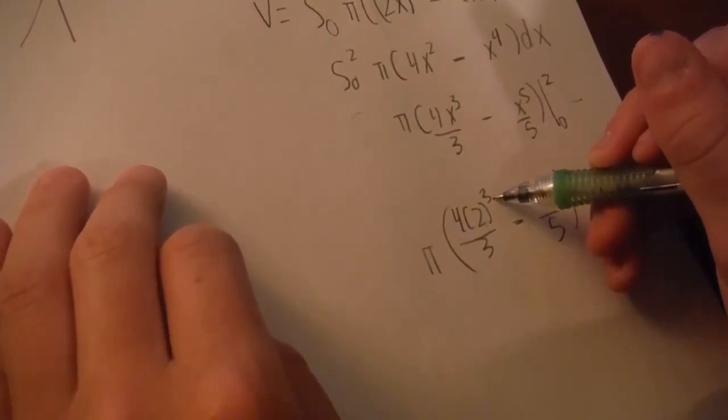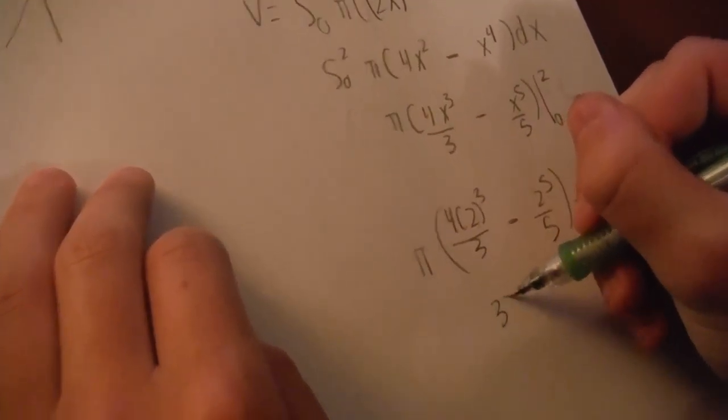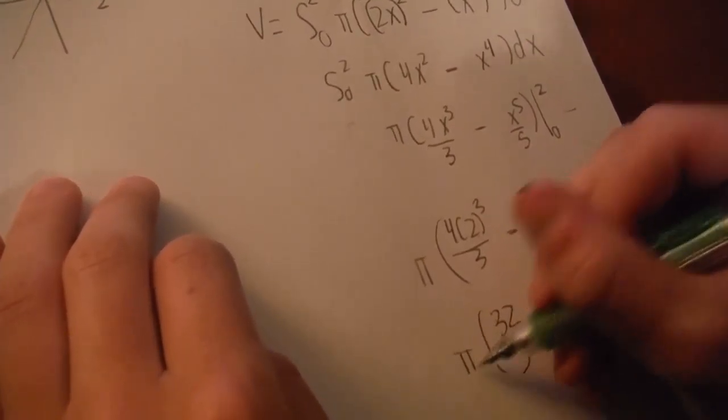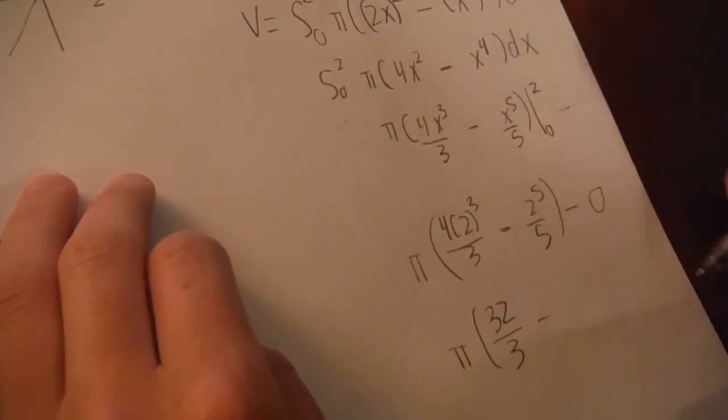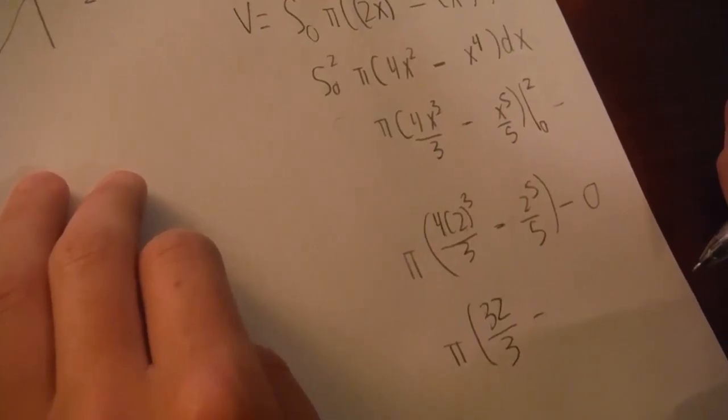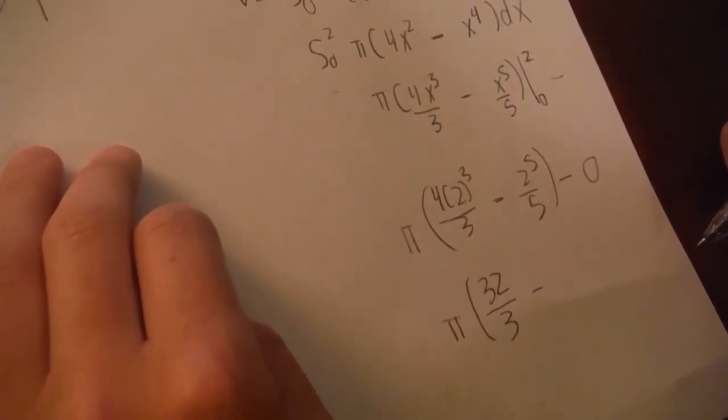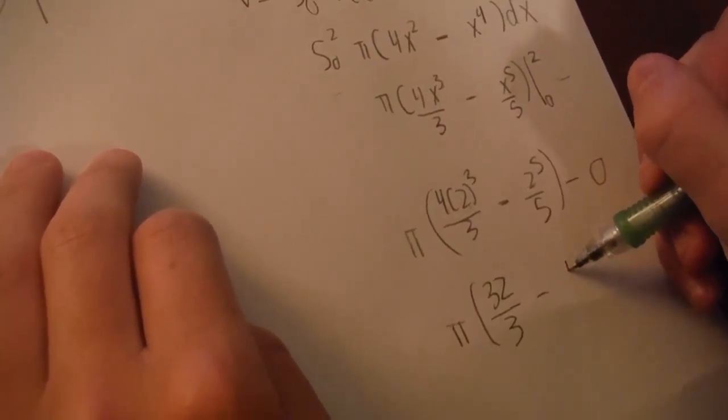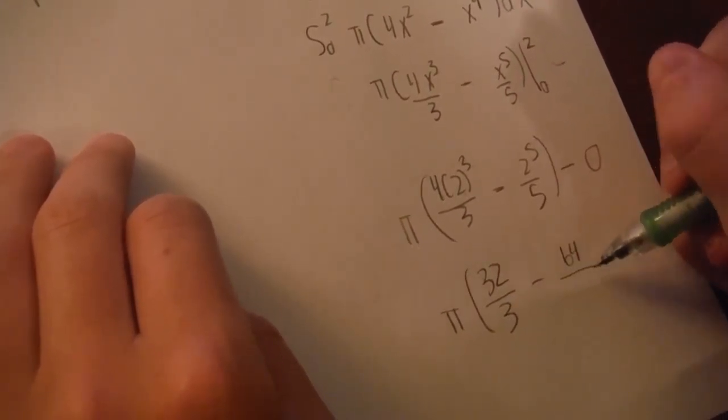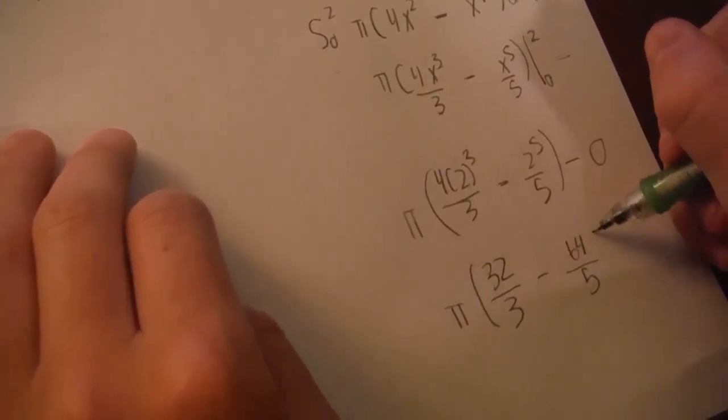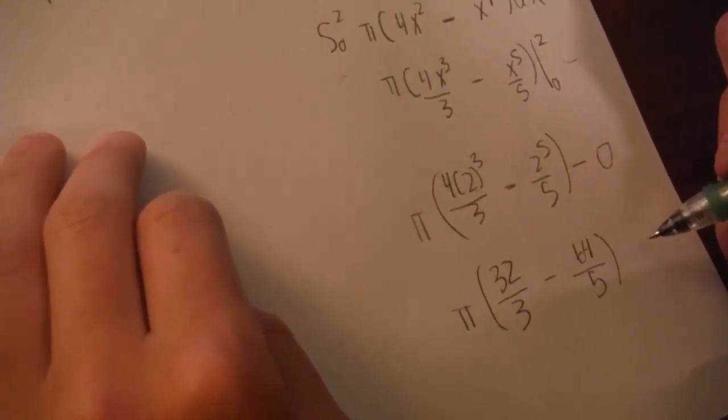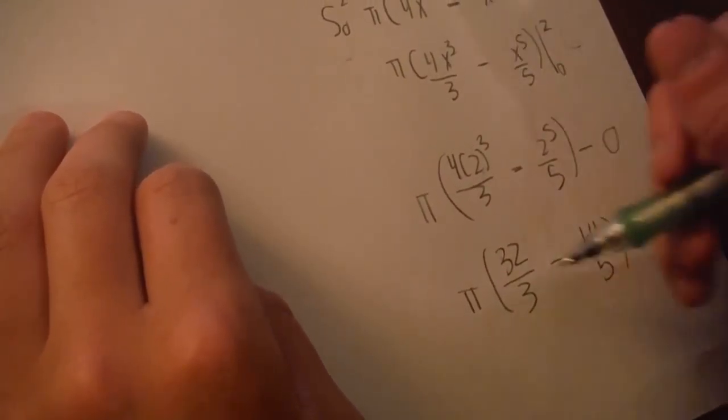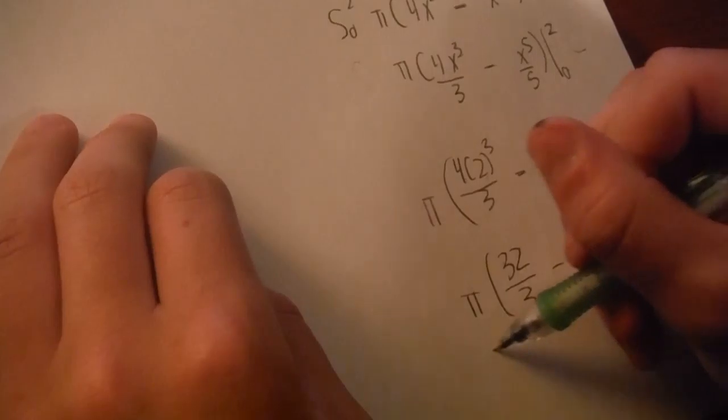Minus, going to be 0 because this is 0 cubed minus 0, so this is 0. So 2 cubed, that's 2 times 2 which is 4, 4 times 2 is 8, 8 times 4 is 32 over 3, still got the pi there. 2 to the 5th, 4, 8, 16, 32, 64 over 5.